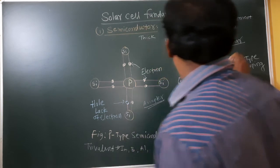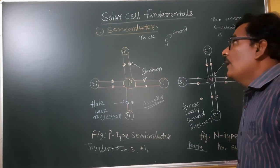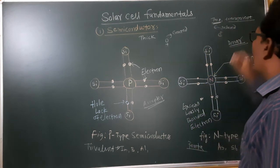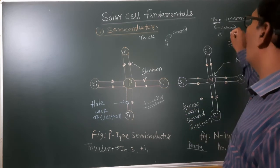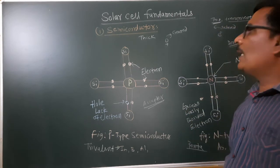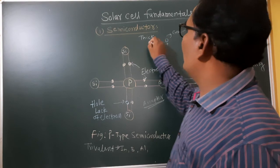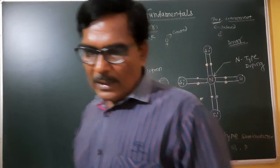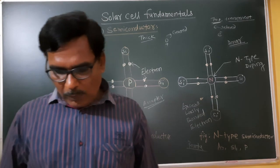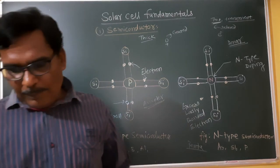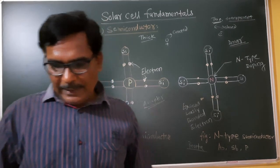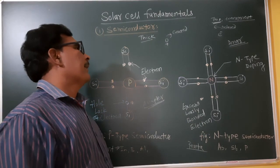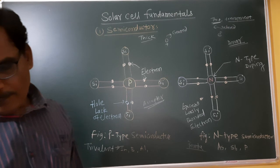P-type is called acceptor and N-type is called donor. In N-type semiconductor, which is thin and transparent, electrons are released — electrons carry negative charge. P-type semiconductor is thick and creates holes, which carry positive charge.